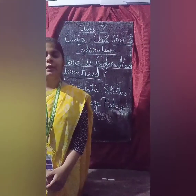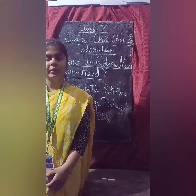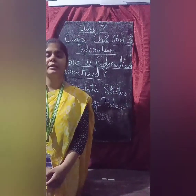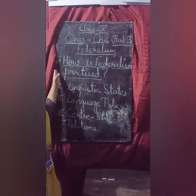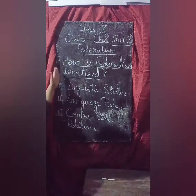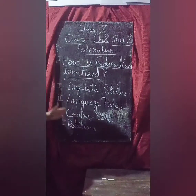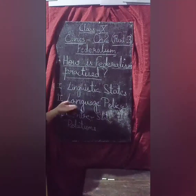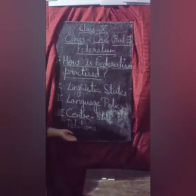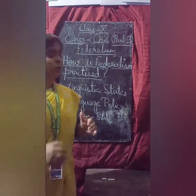Hello students, today we are going to continue the second lesson of civics - federalism. We have already studied two parts, and today in this third part we are going to study the topic: how is federalism practiced? To understand this, we need to understand three things: linguistic states, language policy, and center-state relations.